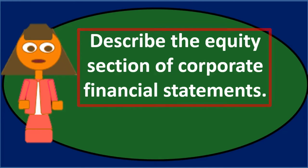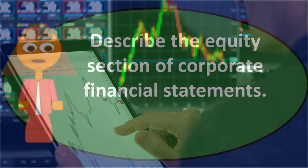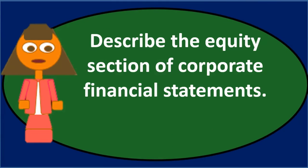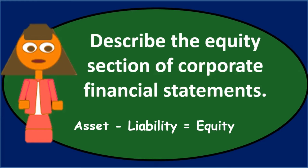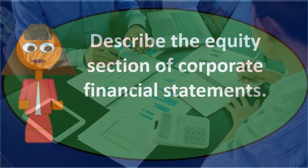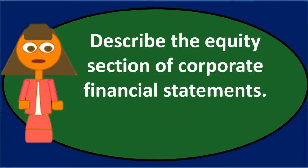If a corporation's shares were all owned by one person, it would be similar to a sole proprietorship, because assets minus liabilities equals what is owed to the owner. If we were to liquidate any type of business, we would sell off the assets, pay off the liabilities, and the difference would be given to the owners — which in essence is the equity section.